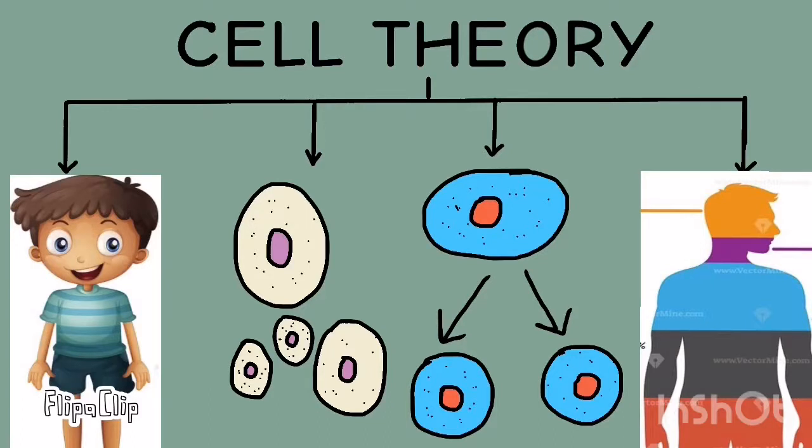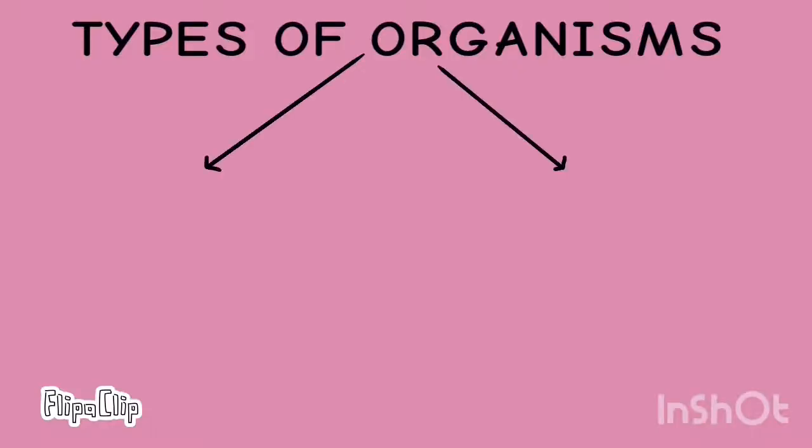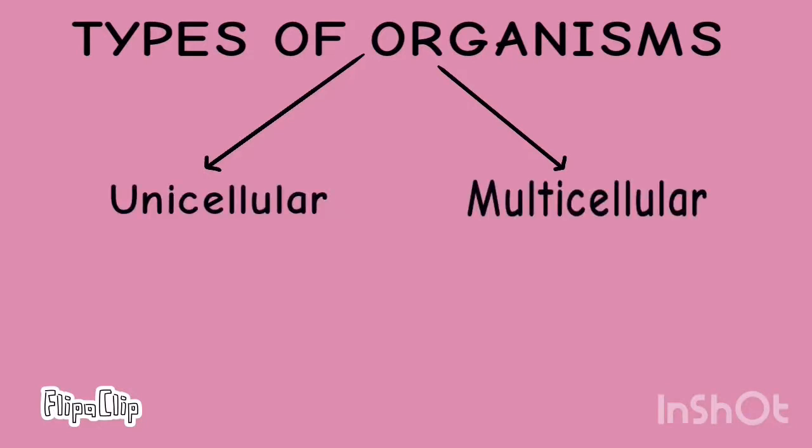Now you understand what is a cell. Okay, I will help you understand more. There are two types of organisms: unicellular and multicellular organisms. Unicellular organisms are the ones that are made up of a single cell. Examples are amoeba and paramecium.